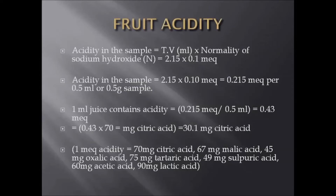Now we calculate the acid in the sample. The titrate value with sodium hydroxide is 2.15 ml. Acid in the sample is equal to titrate value in ml multiplied by normality of the sodium hydroxide. Normality of sodium hydroxide is 0.1. Therefore, acid in the sample is equal to 2.15 into 0.1 milliequivalents, that is equal to 0.215 milliequivalents per 0.5 ml or 0.5 grams of sample. Therefore, 1 ml of juice contains acid equal to 0.215 divided by 0.5 ml, that is equal to 0.43 milliequivalents.